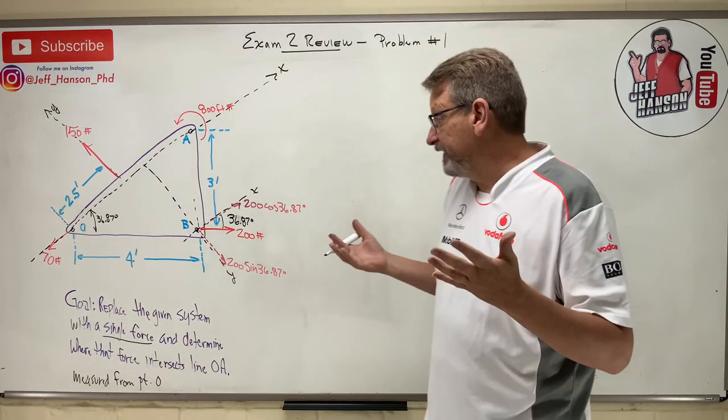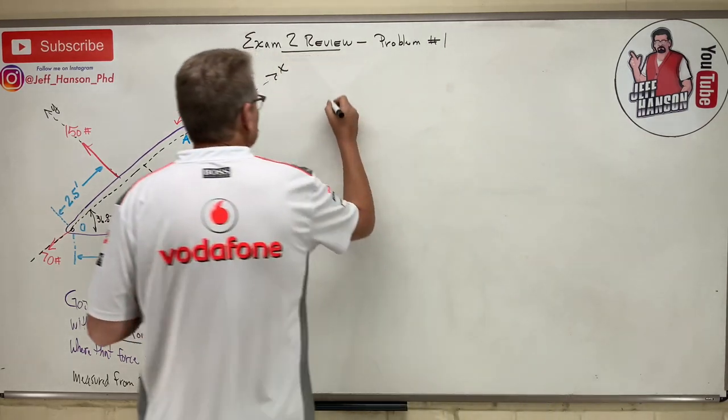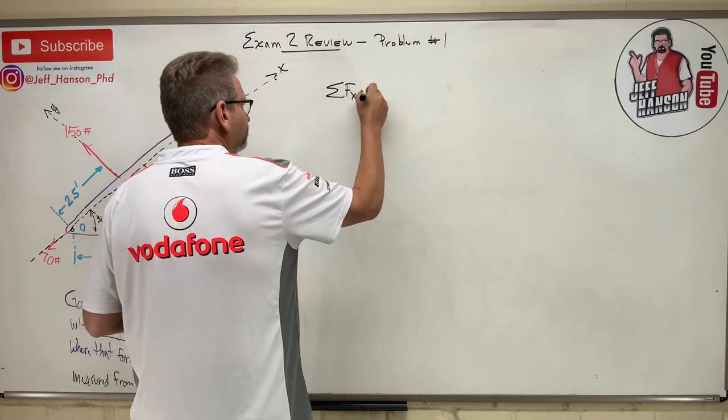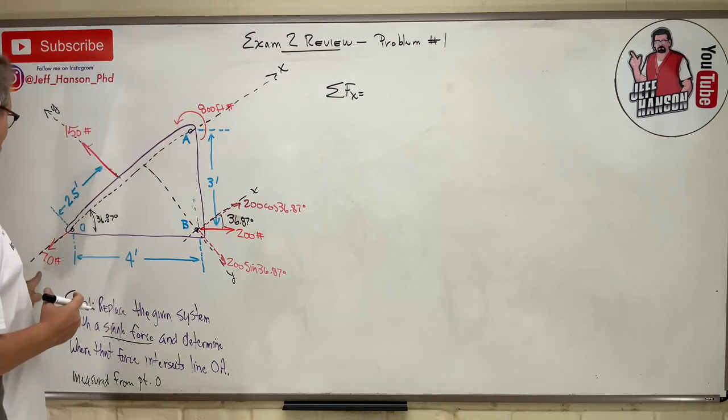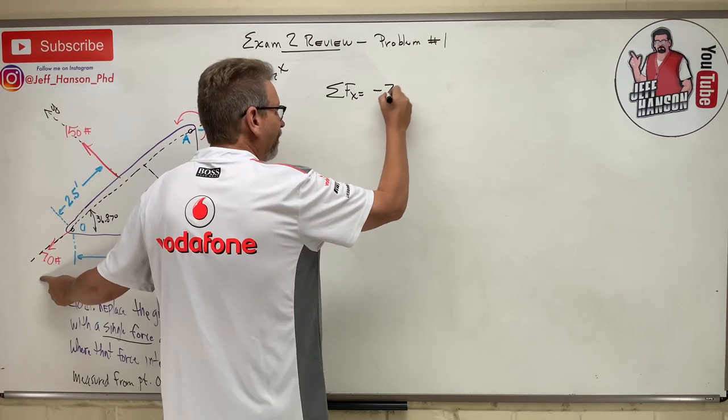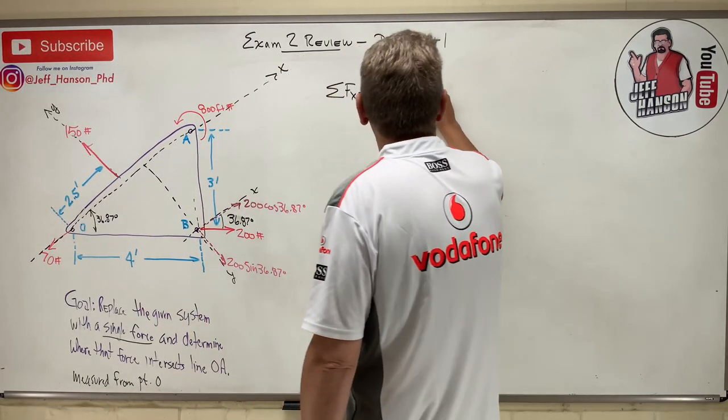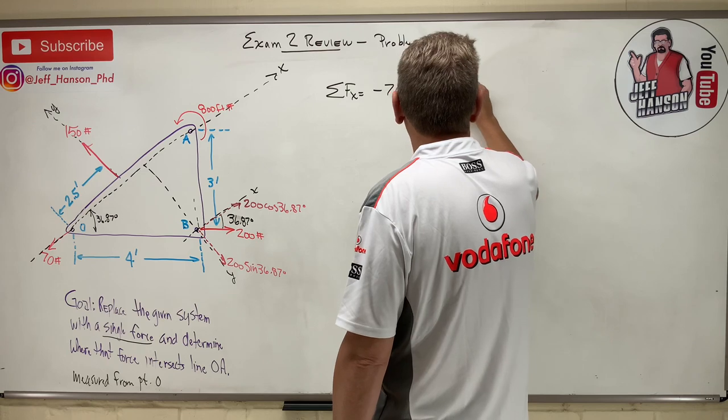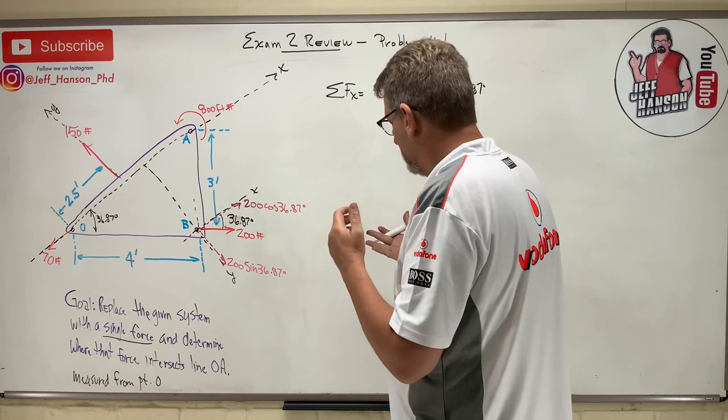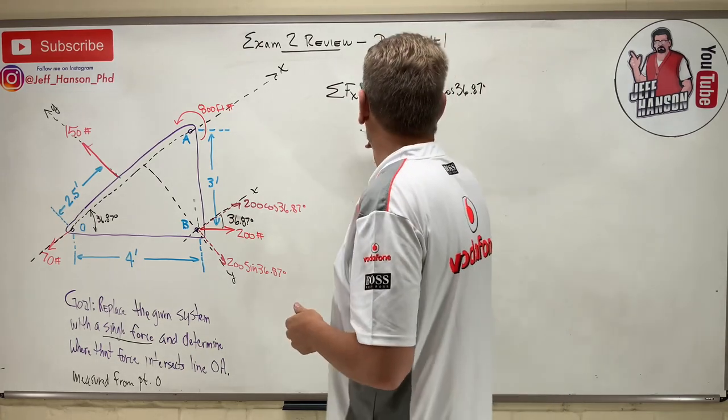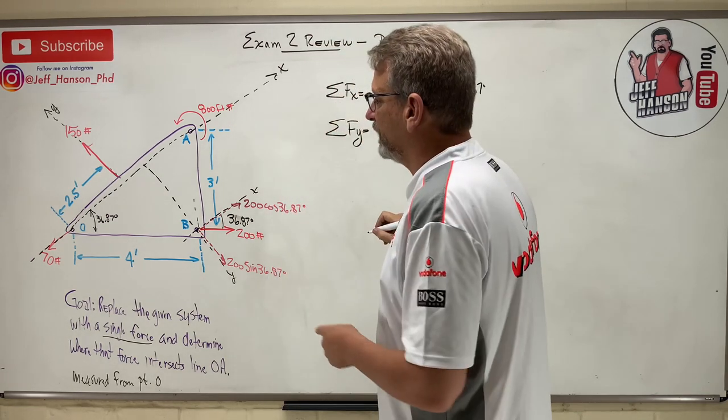Equivalent system problems, here's how we do it. Step one: sum the forces in the x. I almost wrote equals zero - I wanted to so bad, but no. So I have a new x right here, so I have -70, and then I have plus 200 cos 36.87. There's no more forces.